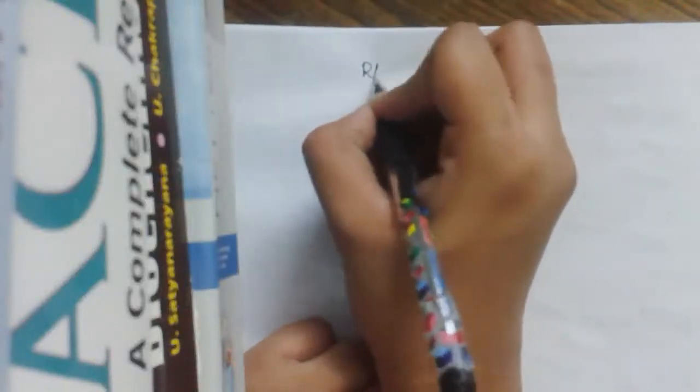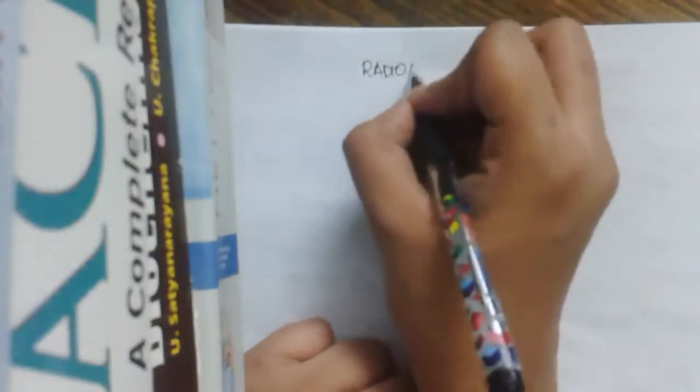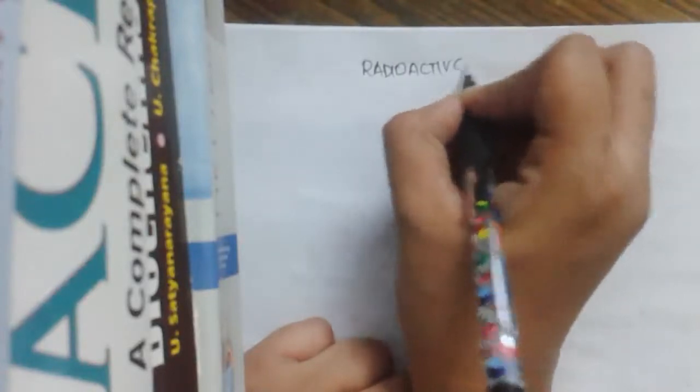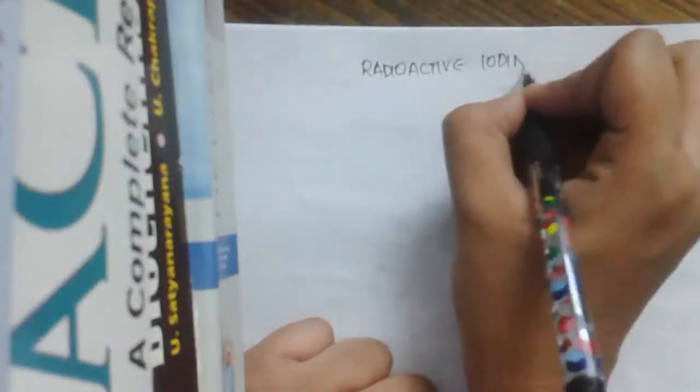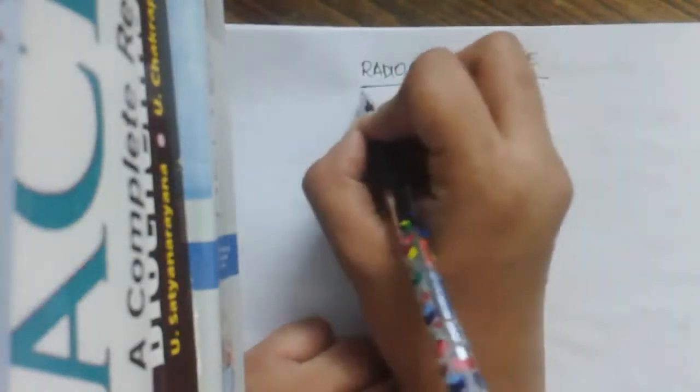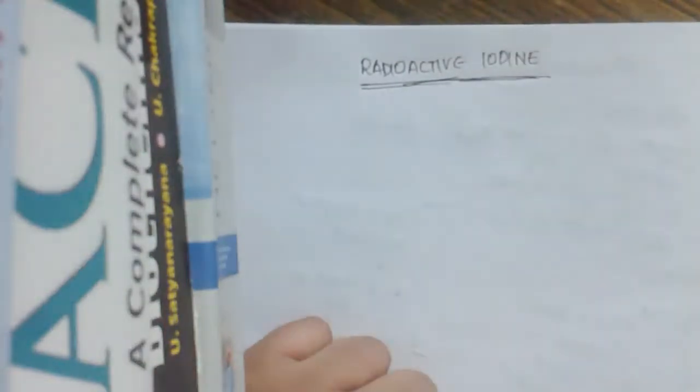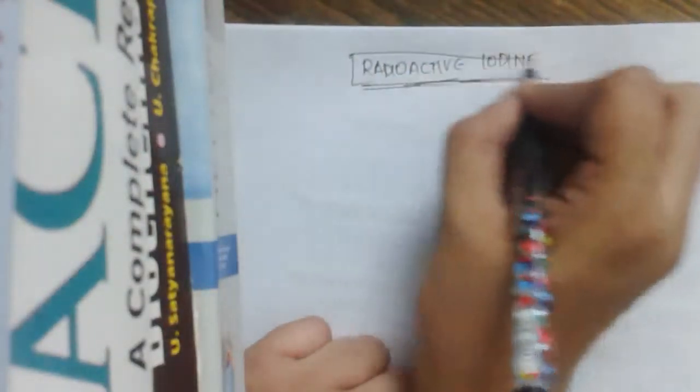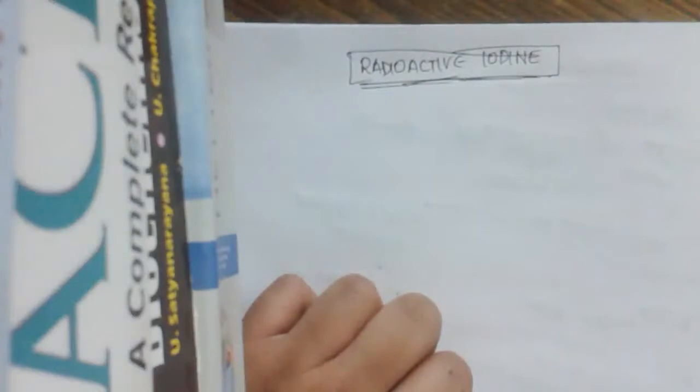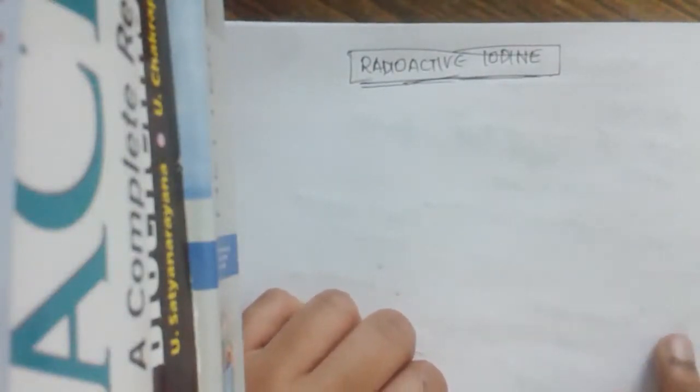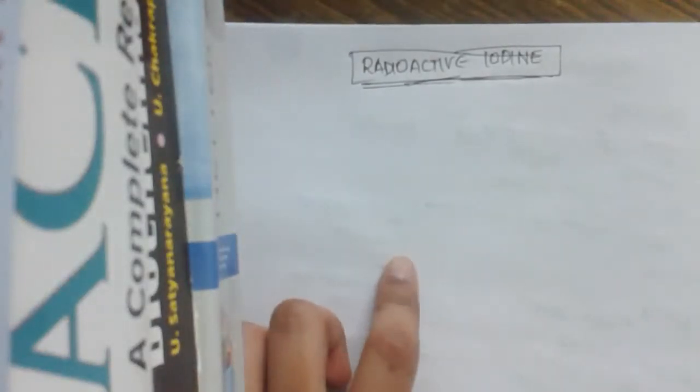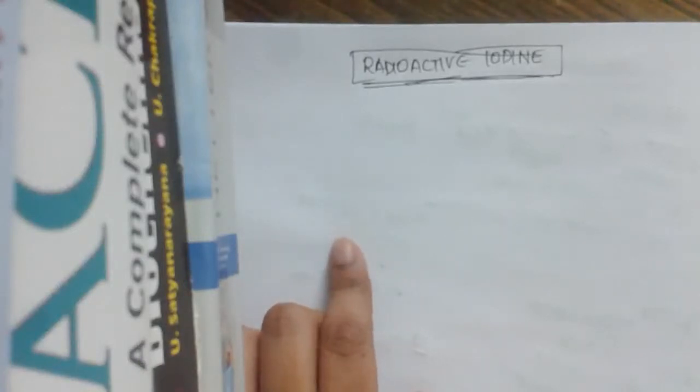Hello friends, now let us learn about radioactive iodine. In our previous class we learned about antithyroid drugs, which include drugs that inhibit thyroid synthesis, and iodine and iodide, which we have completed. Now we are going to learn about radioactive iodine.